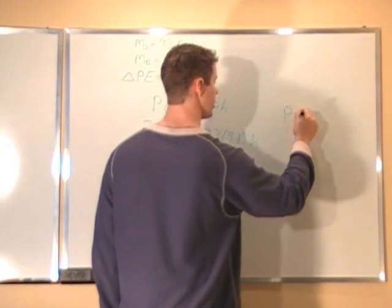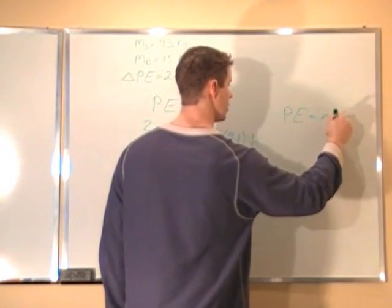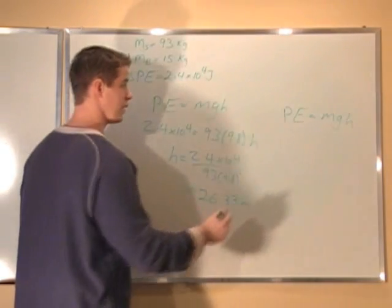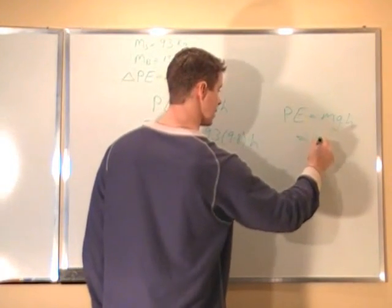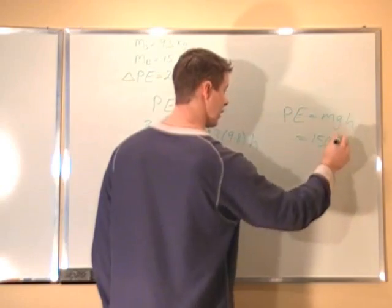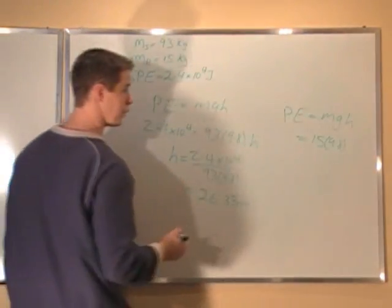Potential energy equals mgh, so the potential energy is going to be 15, because that's the mass, 9.8 for g, and the height is 26.33.